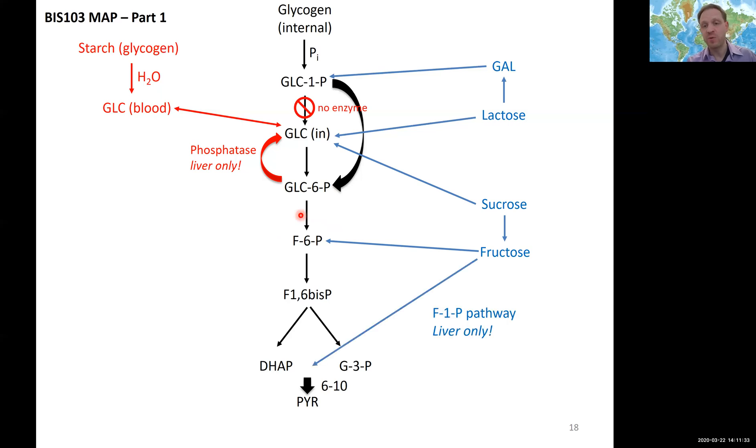The alternate but major pathway was our fructose 1-phosphate pathway. So phosphorylation at a different position with a few additional reactions happening in the liver only, but this can bring fructose in here at the DHAP and G3P stage.